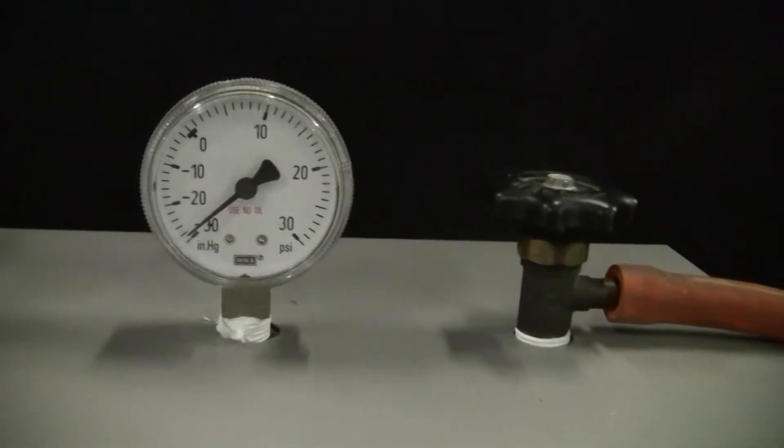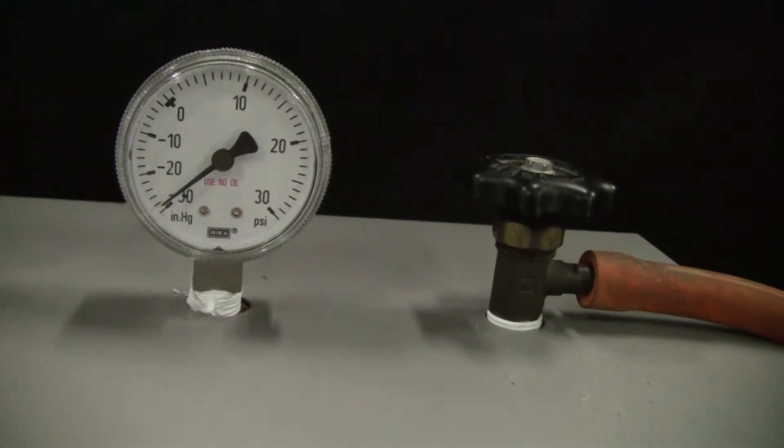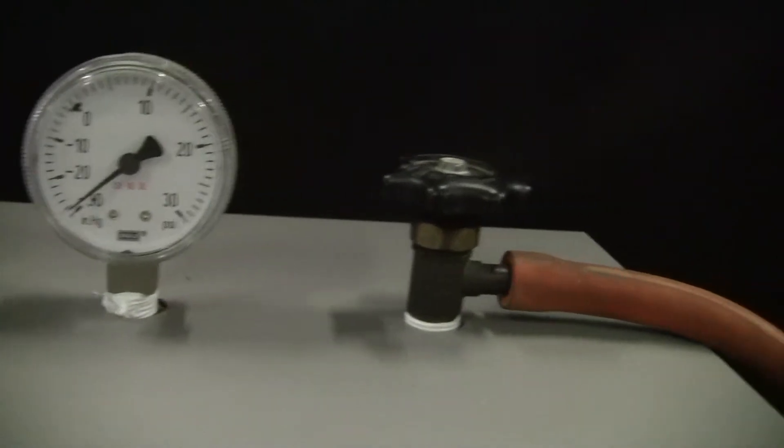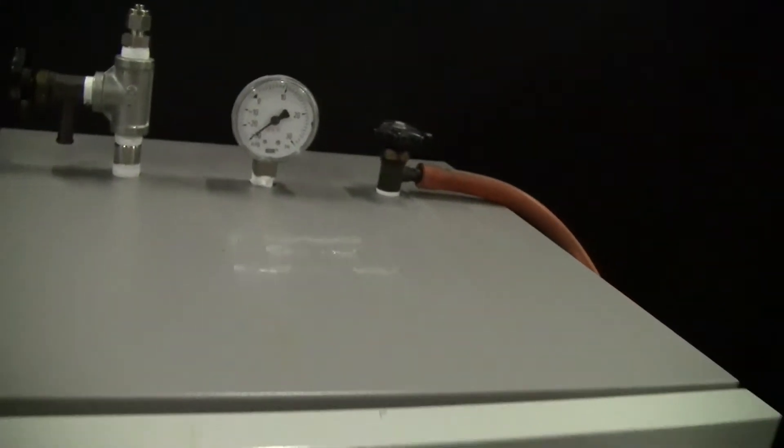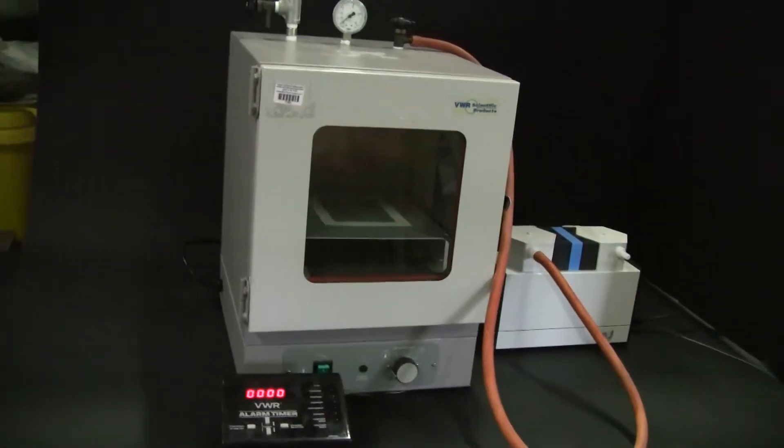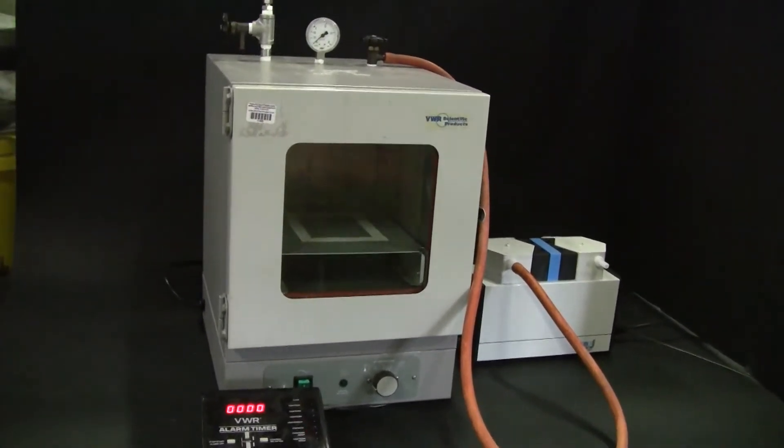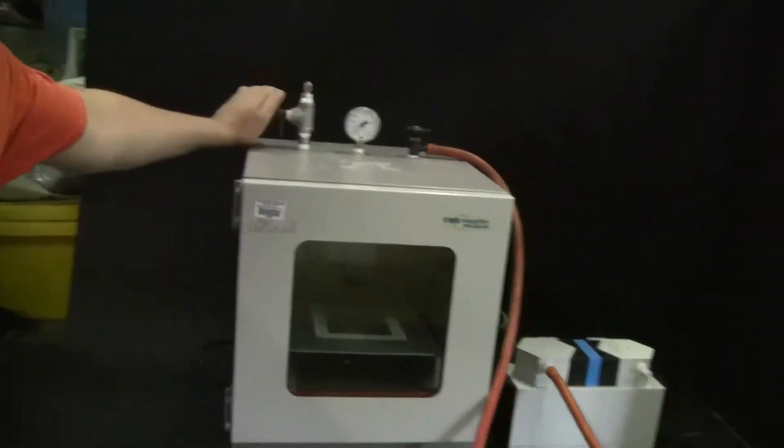We have the end point of our experiment. The vacuum pump has pumped down to just about 28 inches of mercury. And we're going to run a short experiment to see how long this little pump takes to pump down to that amount of vacuum. So let's first release the vacuum from the chamber, venting it out.